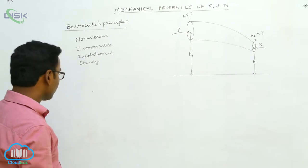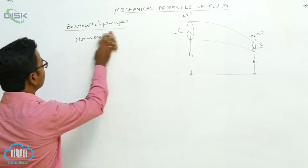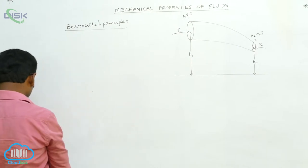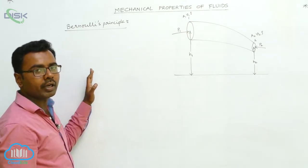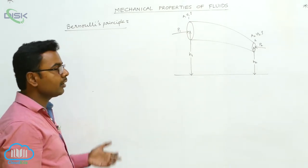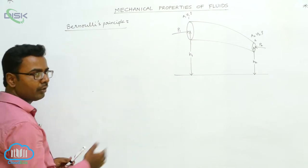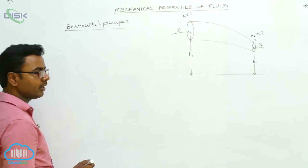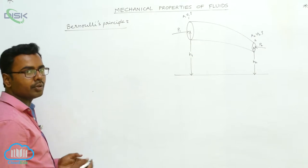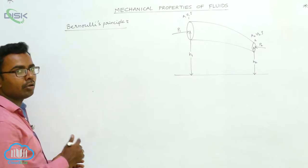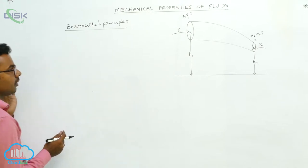Now let's see what Bernoulli's principle is. The Bernoulli's principle states that when a non-viscous, incompressible, irrotational fluid flows steadily through a tube of flow, then along the streamline, the sum of the pressure energy, potential energy, and kinetic energy per unit volume remains constant at all points along the line of flow.